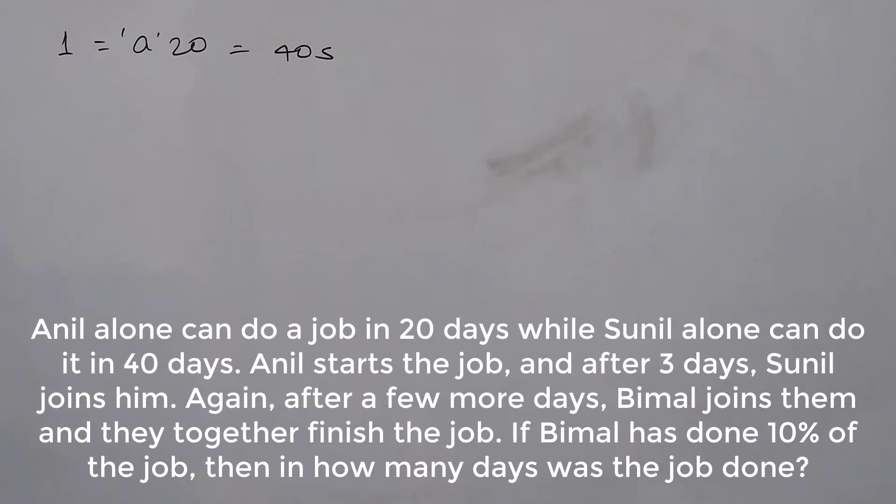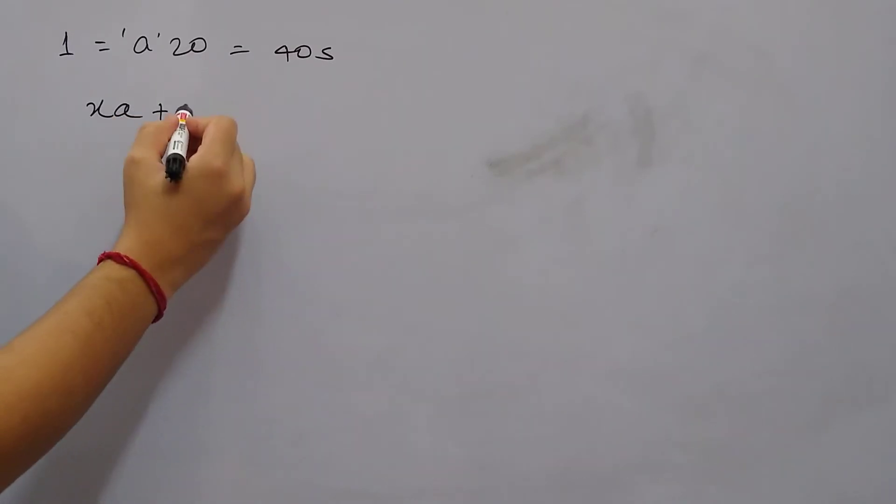So let's say the job was done in x days. A worked for x days, so total contribution by A is xa. And Sunil joined after three days, so that means Sunil's contribution is x minus 3 days, he worked for x minus 3 days into s units of job per day.